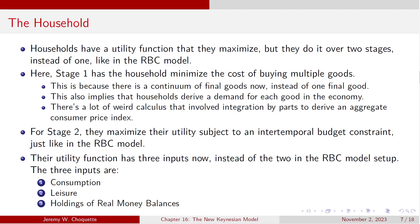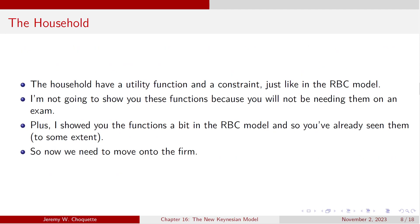Stage two: they maximize their utility subject to an intertemporal budget constraint, just like in the real business cycle model. Now the utility function has three inputs instead of just the two we saw in the real business cycle model. Remember, in the real business cycle model we had consumption and leisure. Now we also have the holdings of real money balances — which is essentially holding cash. The more cash you hold, the more utility you get, because that cash can then be used for transactions. There is a positive utility associated with holding real money balances. The household's utility function and constraint are similar to the RBC model, but with this additional input.